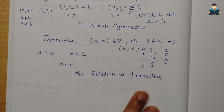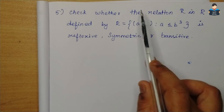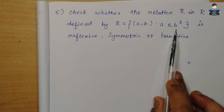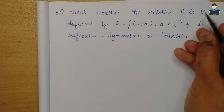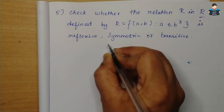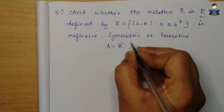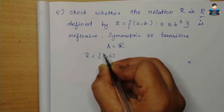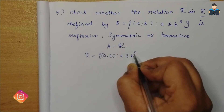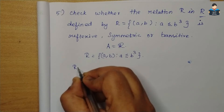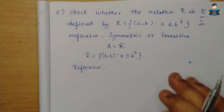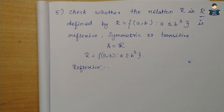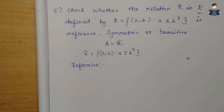This sum is complete. Now moving to the next question: set A is the set of real numbers, and the relation is R = {(a,b) : a ≤ b³}. We will prove whether it is reflexive, symmetric, or transitive.